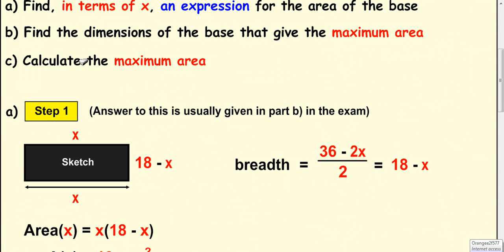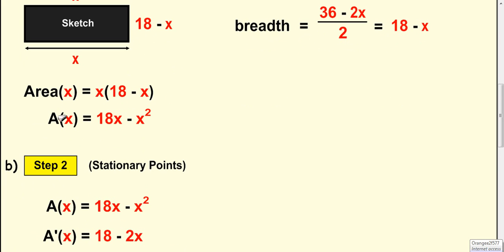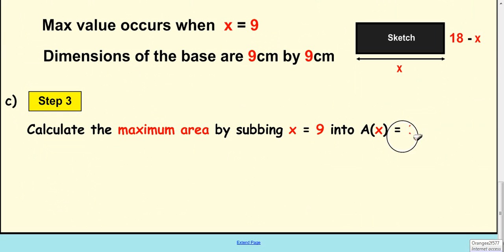Now the last part of the equation says actually calculate the maximum area. So in part A, we calculated a function for the area. And we've just proven the maximum value occurs for the area when x is 9. So we substitute 9 in here. So it'll be 18 times 9 minus 9 squared. That will give us our maximum area. So sub it in and we get this. Multiply 18 by 9, you get 162. Take away 81, which is 81 cm squared.